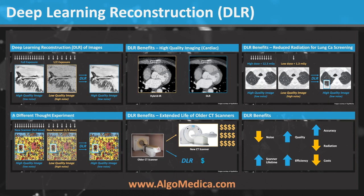I hope you enjoyed this brief review of Deep Learning CT image reconstruction. We covered several benefits of DLR, including improving image quality, extending the life of a CT scanner, and reducing radiation dose. We also discussed how DLR could potentially improve diagnostic accuracy and productivity, both by providing high-quality images that otherwise would not be available. If you would like to learn more about this technology, visit AlgoMedica's website. They offer a practical, inexpensive, vendor-neutral DLR solution. Thank you.